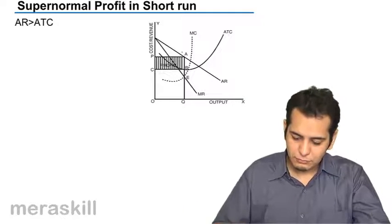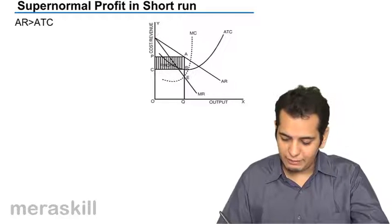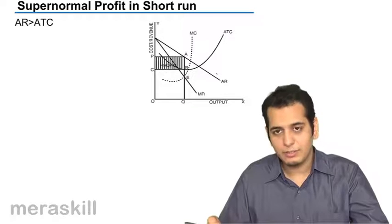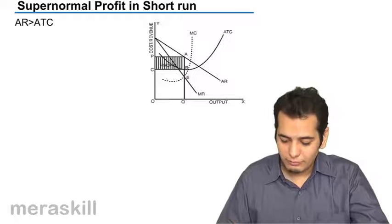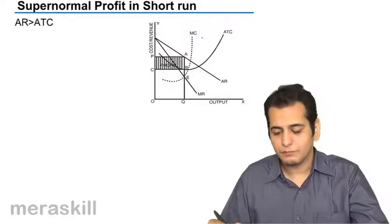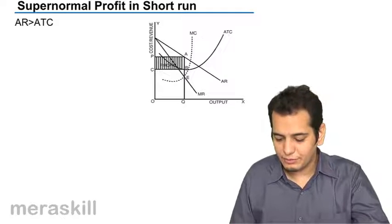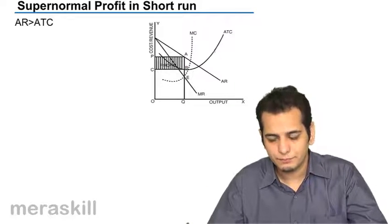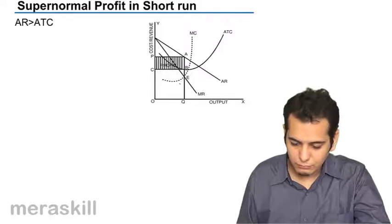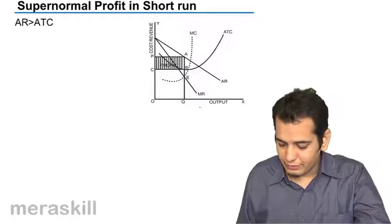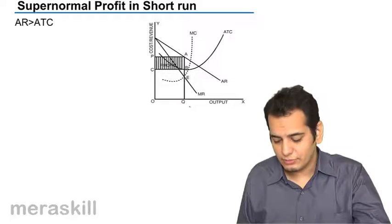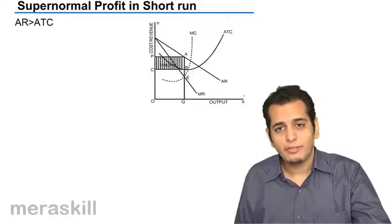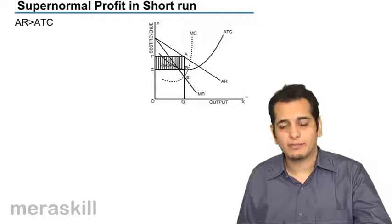Now in this graph we have the MR curve, we also have the AR curve, along with it we have the MC curve, and finally there is this ATC curve which is u-shaped. We have taken the output along the x-axis, that is the total production, and the price, revenue, or cost on the y-axis.